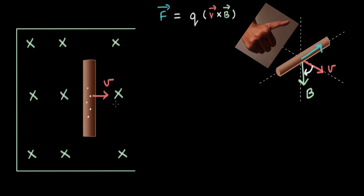That direction is for a positive charge, but we are interested in the direction of force on electrons. So the direction of force on the electrons is just opposite to this — it will be vertically downward in this setup.